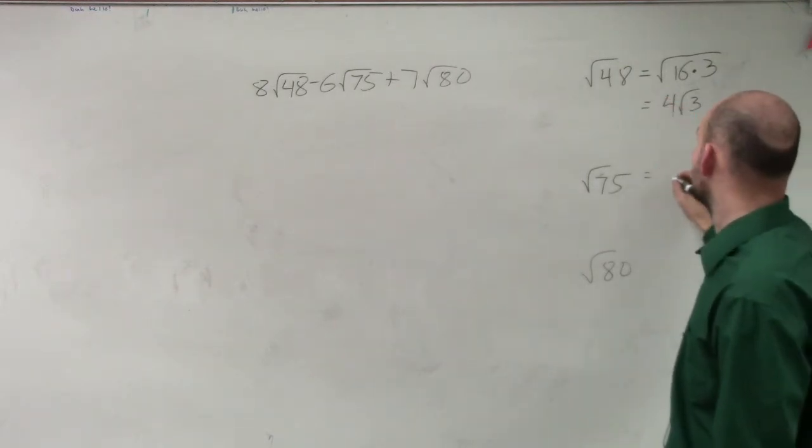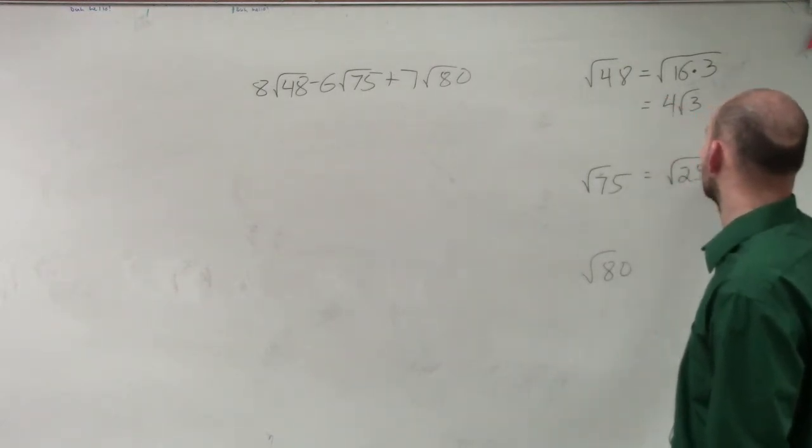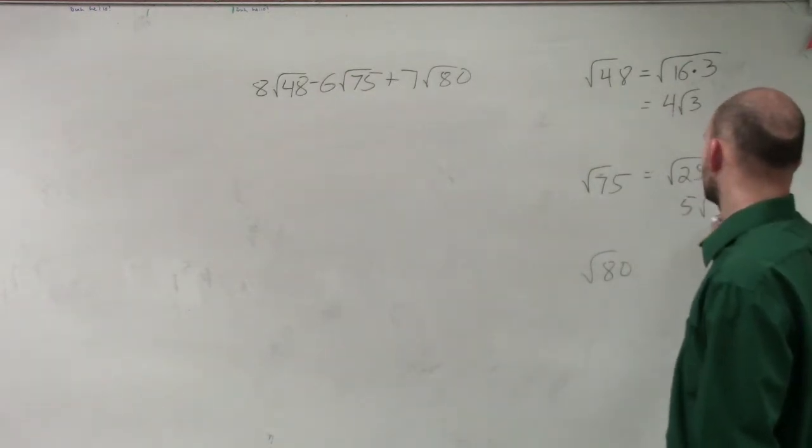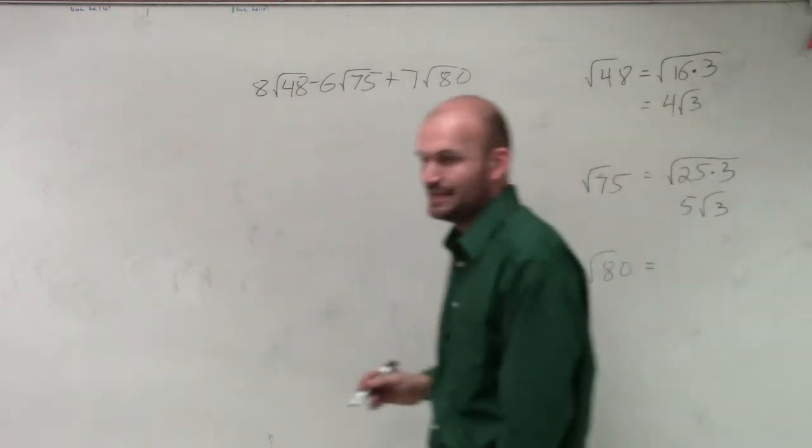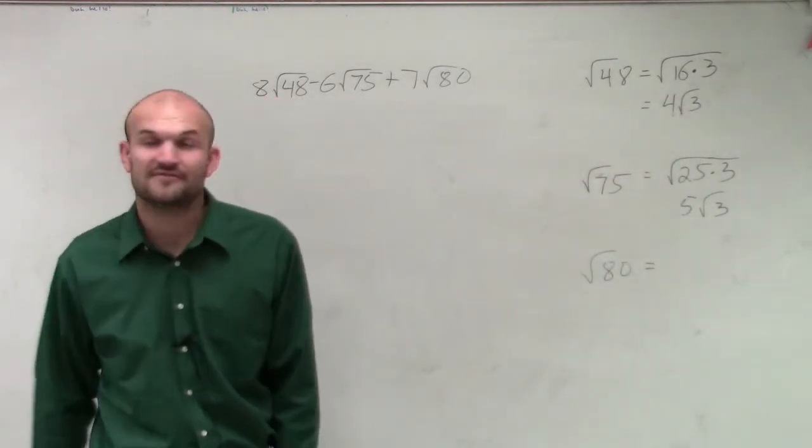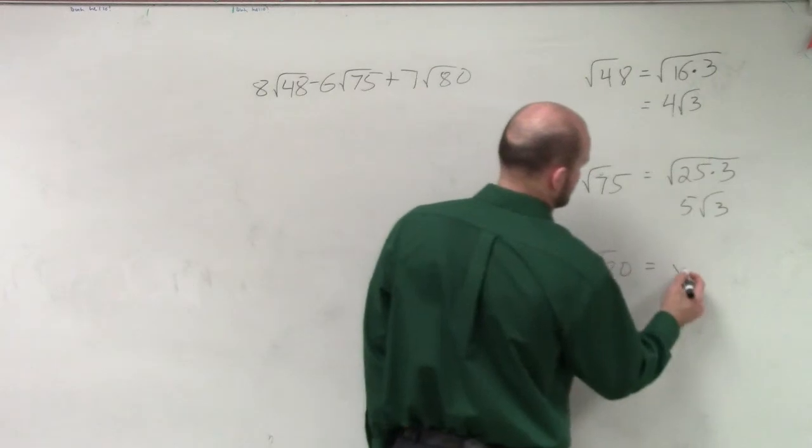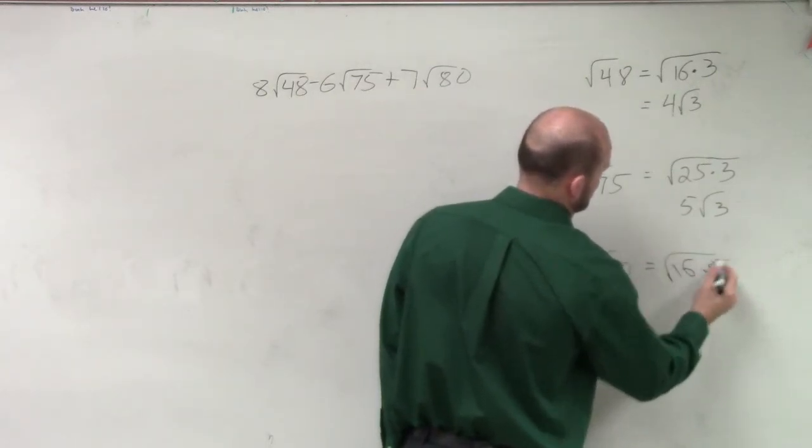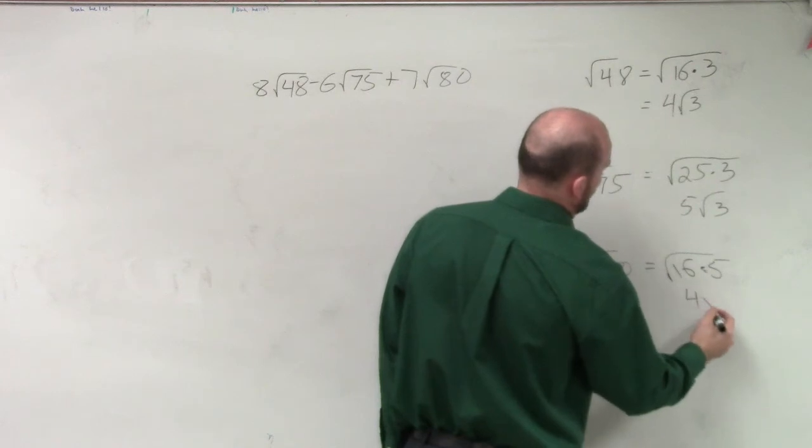Square root of 75. What about the square root of 25 times 3? Square root of 25 is 5, radical 3. Square root of 80, you could say 16 again and 5. Therefore, it's 4 square root of 5.